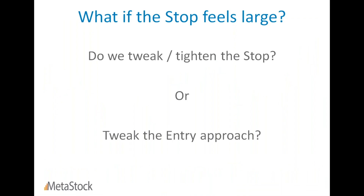Coming to risk and exits, that's an important aspect. We often get the question: what if the stop loss feels very large? The ideal stop when buying is to look at where the immediate swing low is, or to simplify that, look at the five-bar low and place a stop. What if you've identified a perfect first breakout with all confirmation and good volume, but the five-bar low is a good four or five percent down and doesn't agree with your risk management? There are two options. I would suggest not tweaking or tightening your stop because we've tested all systems keeping in mind that five-bar high or five-bar low stop.